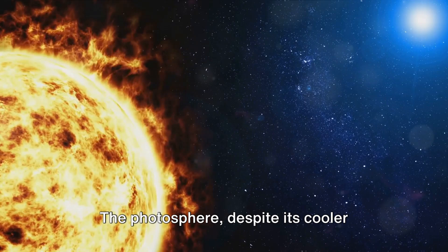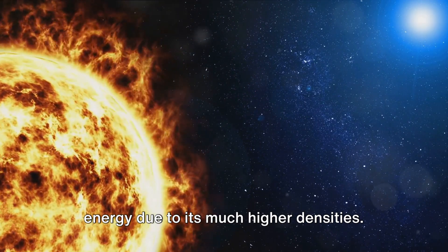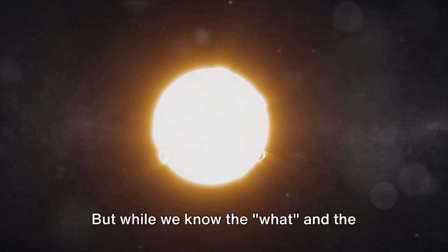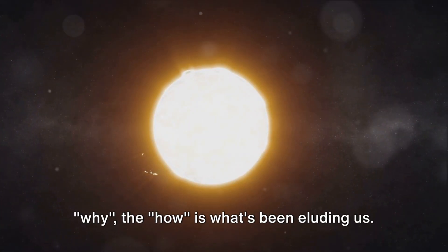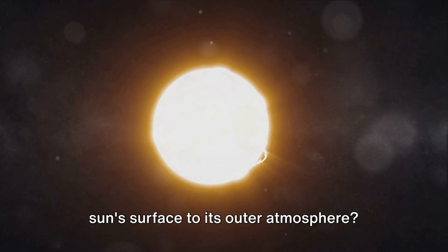The photosphere, despite its cooler temperature, actually has a higher total energy due to its much higher densities. This energy is what heats up the corona. But while we know the what and the why, the how is what's been eluding us. How is this energy transferred from the Sun's surface to its outer atmosphere?